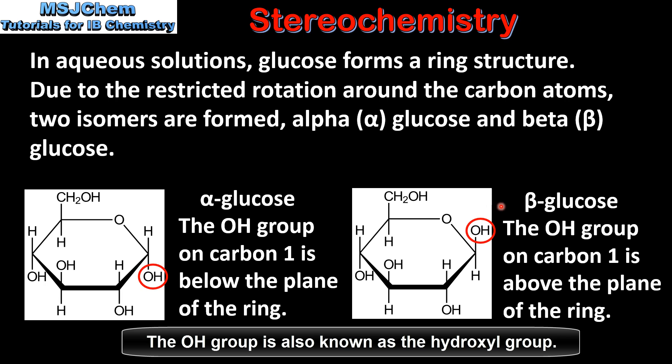On the right we have beta-glucose. In beta-glucose the OH group on carbon number one is above the plane of the ring.